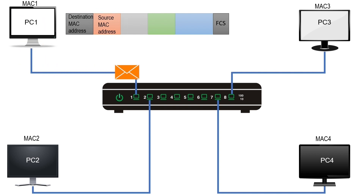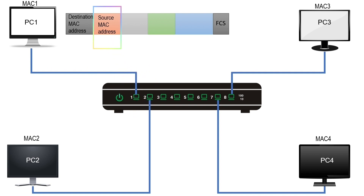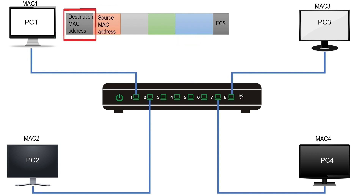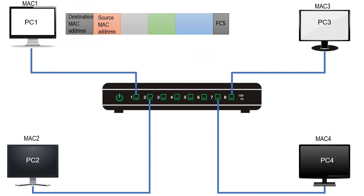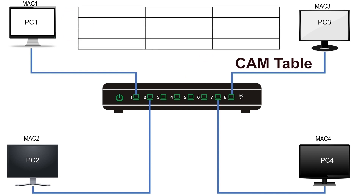When a switch receives a frame, it reads the source MAC address and destination MAC address of the frame. It uses the source address to learn about the connected device and the destination address to make a forwarding decision. It saves source addresses in a table known as the CAM table. The CAM table has three fields: MAC address, port, and aging.